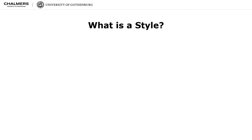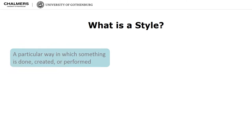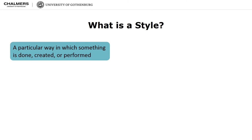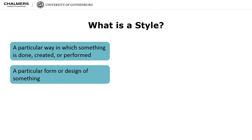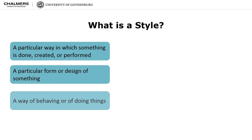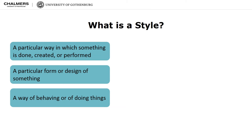According to Merriam-Webster, a style is a particular way in which something is done, created, or performed; a particular form or design of something; or a way of behaving or of doing things.